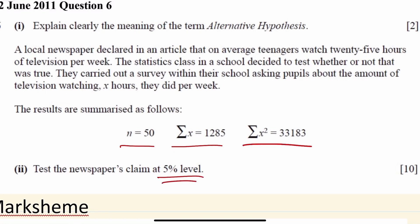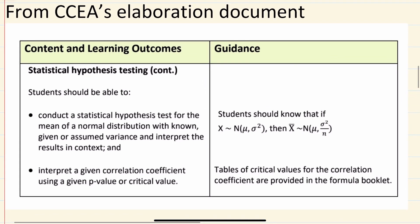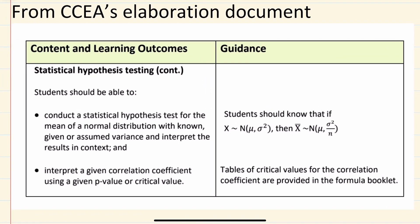Why I don't think this is going to be asked is from CCEA's elaboration document. This may be alright on another exam board like Edexcel, AQA, or OCR, but for CCEA, I don't think it should be. The elaboration document says students should be able to conduct a statistical hypothesis test for the mean of a normal distribution with known or assumed variance. That's not the case here. We're going to have to calculate the variance.